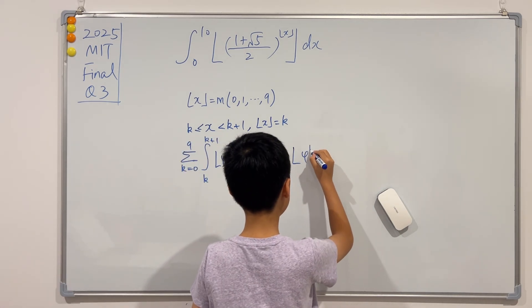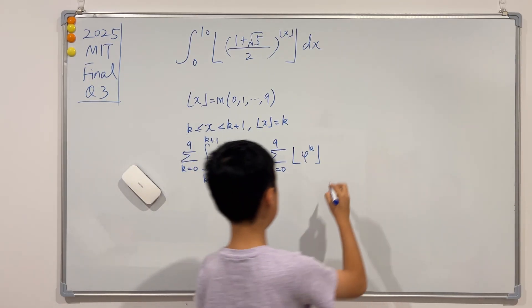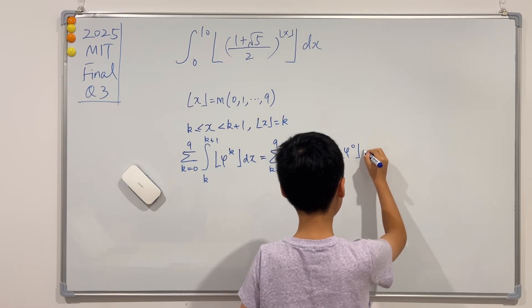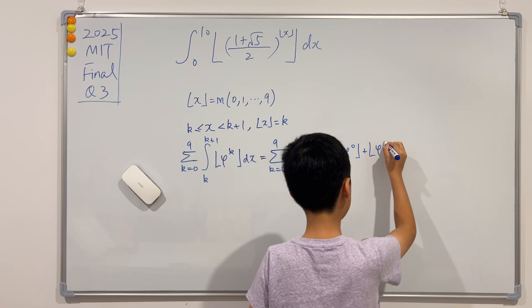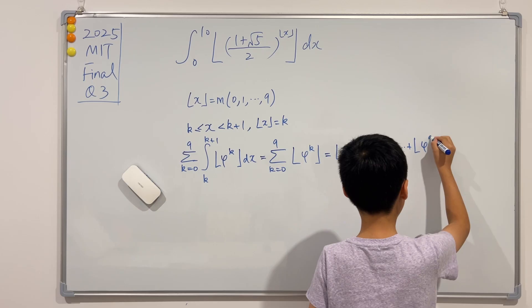Now if I unpack this summation, you see that we'll get the floor of phi^0 plus the floor of phi^1 plus all the way up to the floor of phi^9. Now the first change I'll do is we see that this is obviously 1.